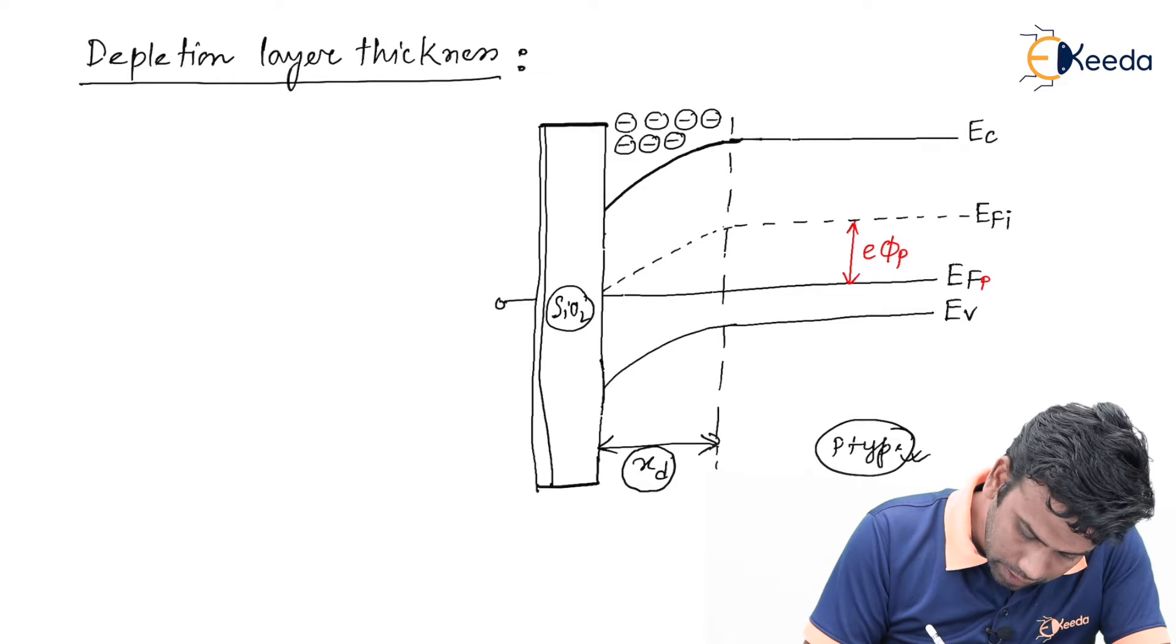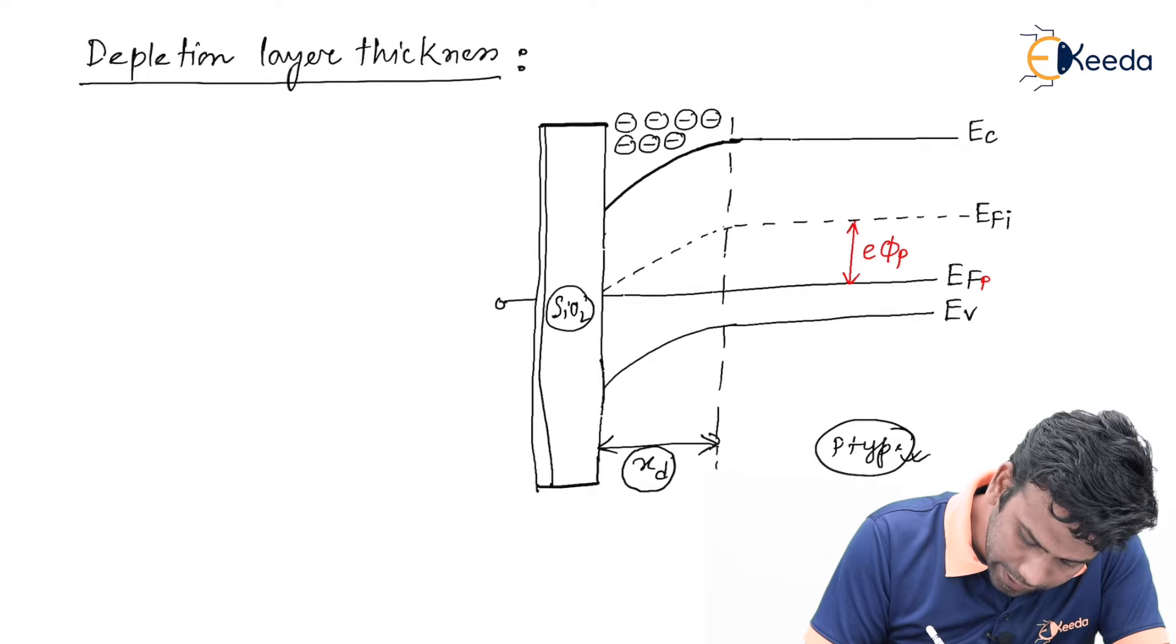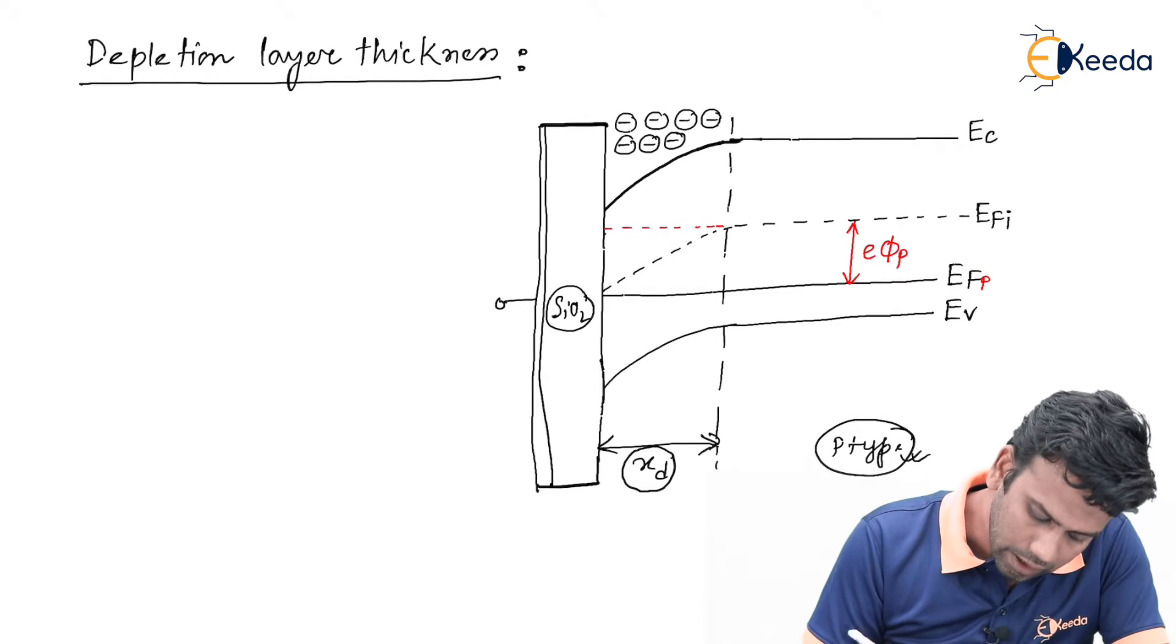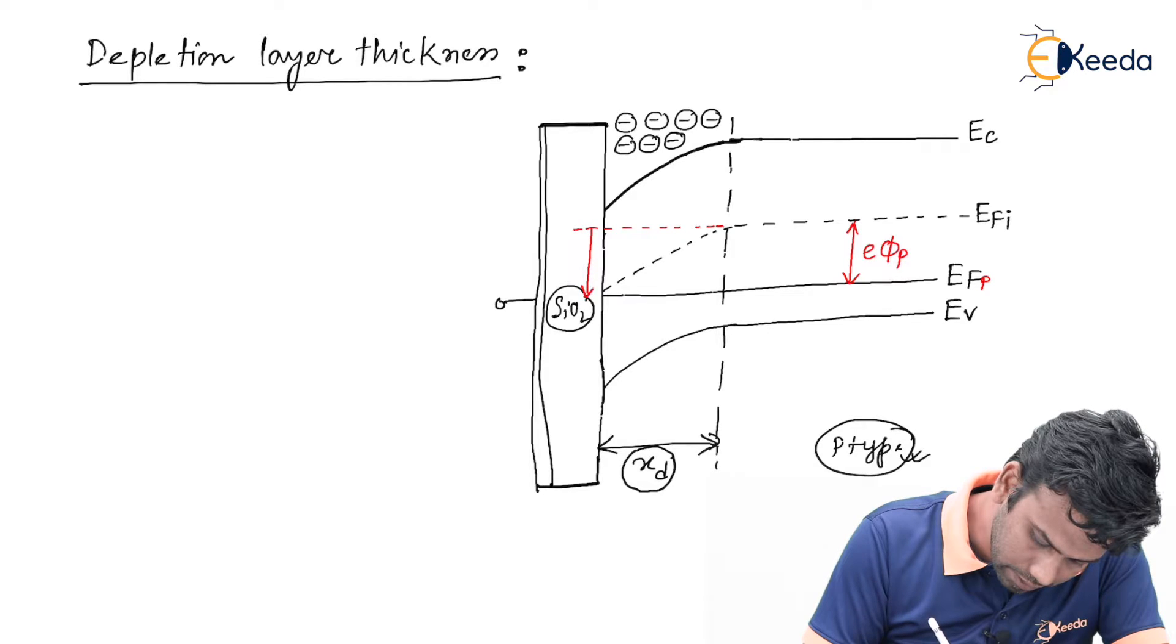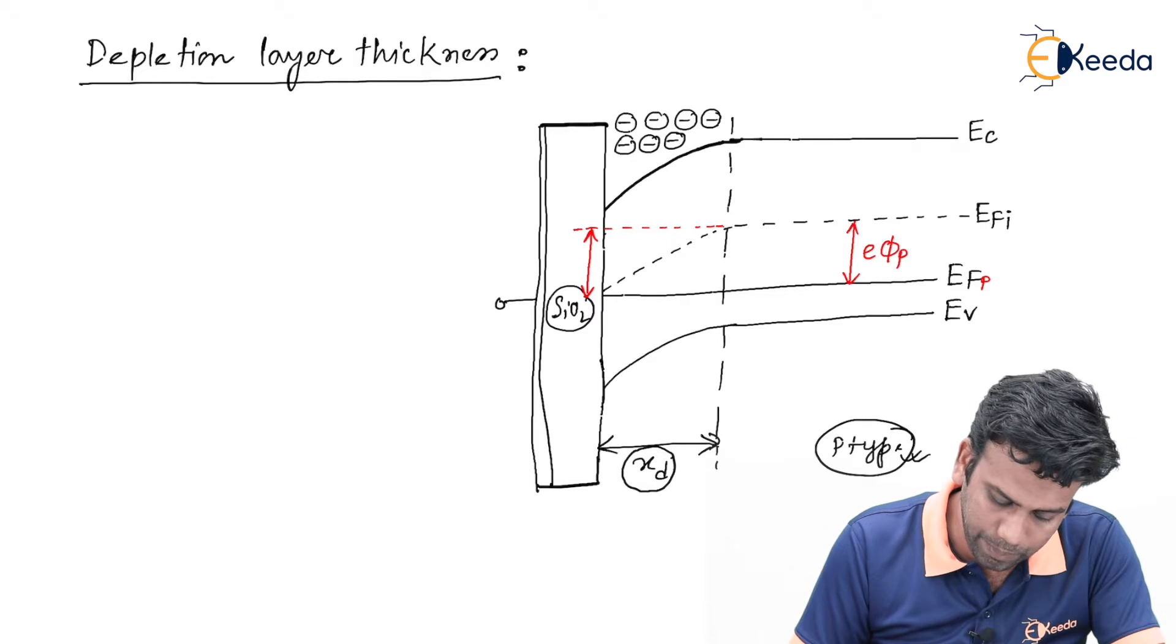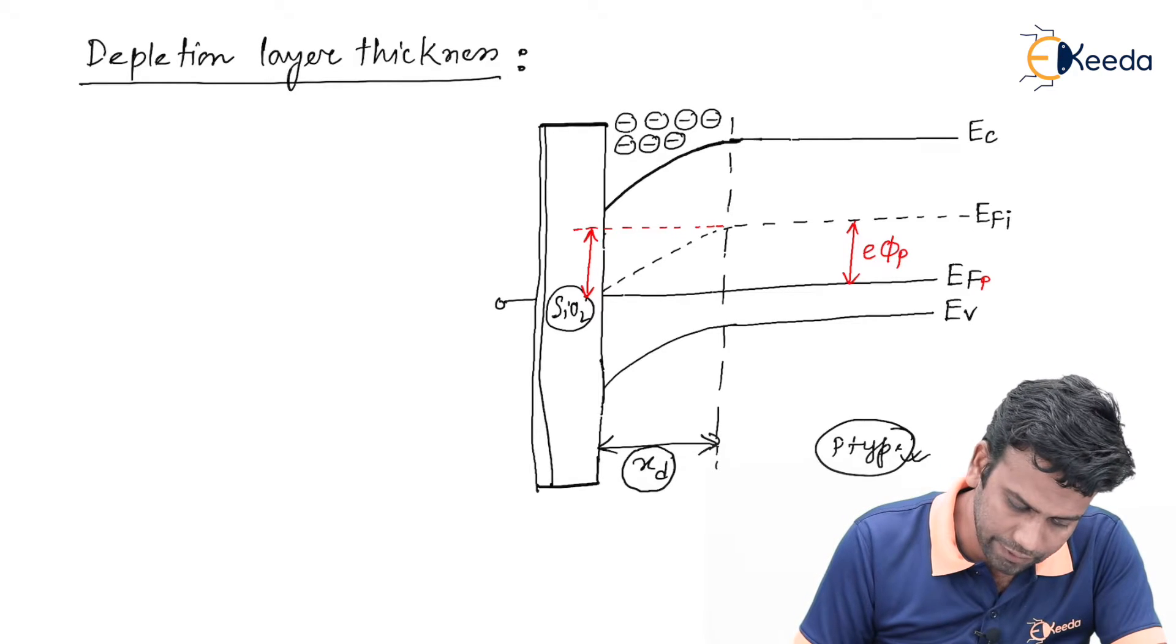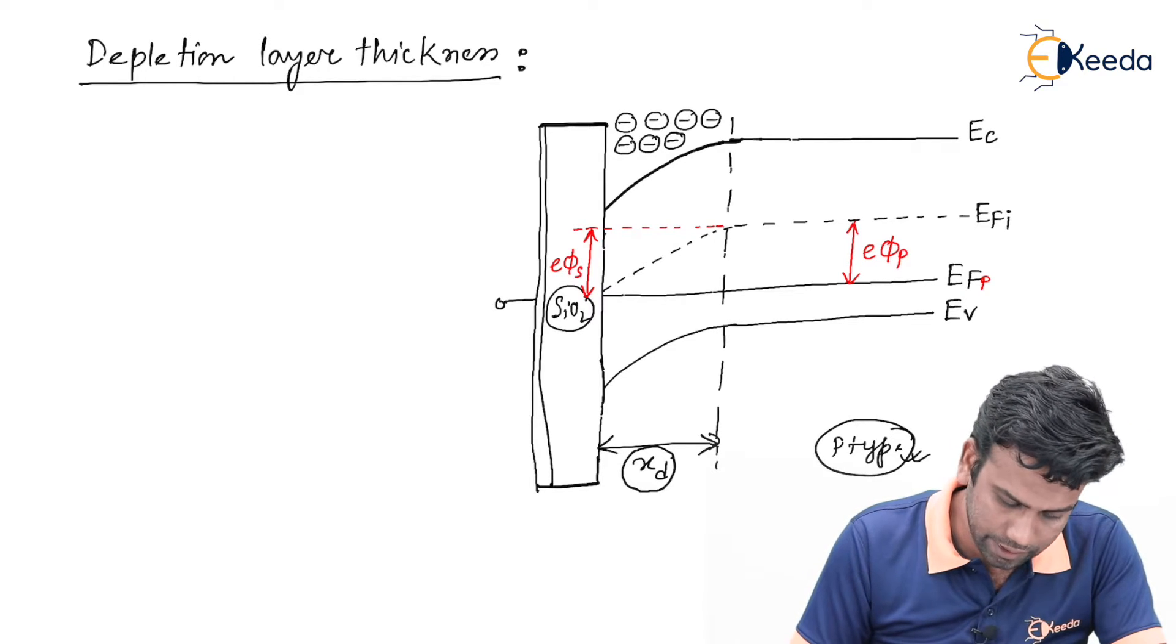This energy difference, if I extend the line of E Fermi towards the surface, then we can see this is the energy difference between the intrinsic Fermi level and the surface. I am denoting this as E phi S.